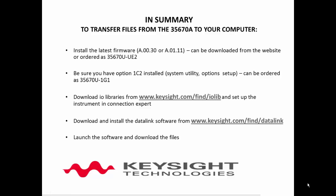To summarize the process for transferring files from your 35670A to your computer, simply follow these five steps. One, install the latest firmware on your instrument, either A.00.30 or A.01.11. Two, be sure you have option 1C2 installed on the instrument. Three, install the IO libraries on the computer and configure the instrument in Connection Expert. Four, download the Datalink software from www.keysight.com/find/Datalink. Five, launch the software and download the files.